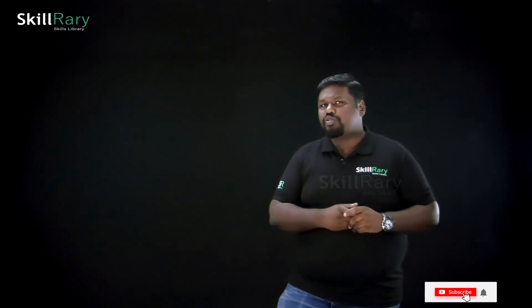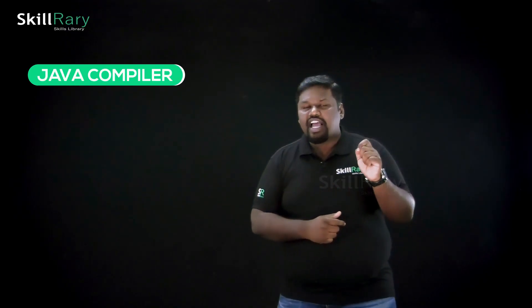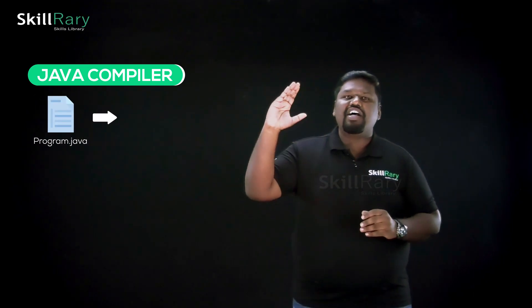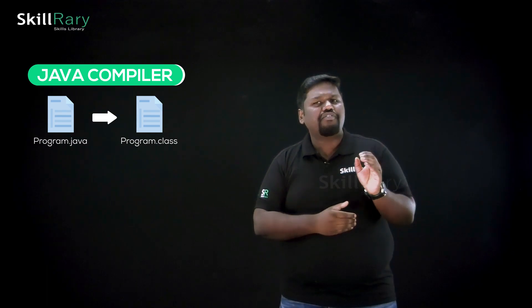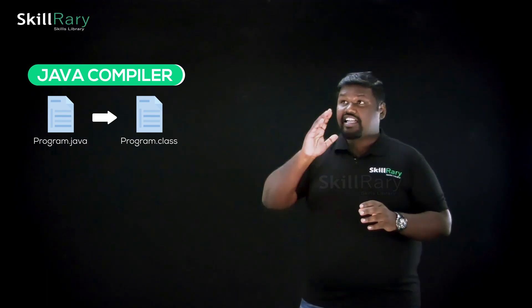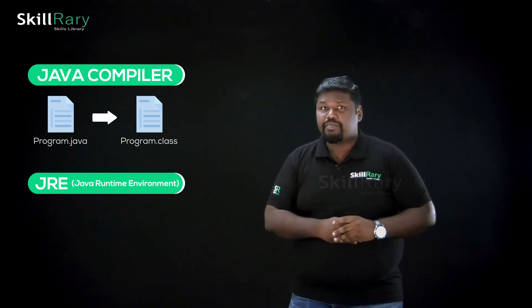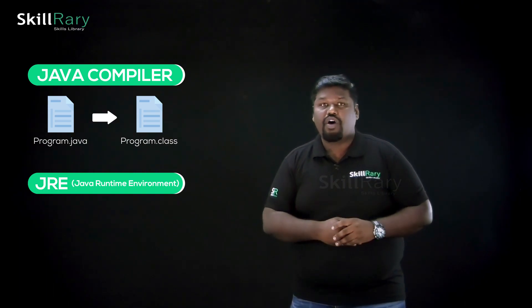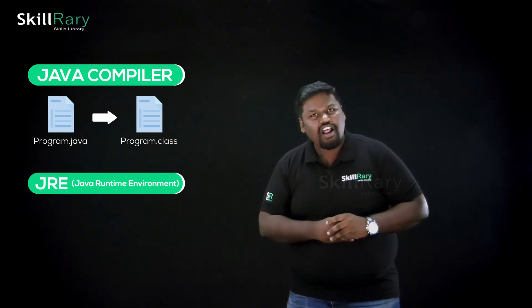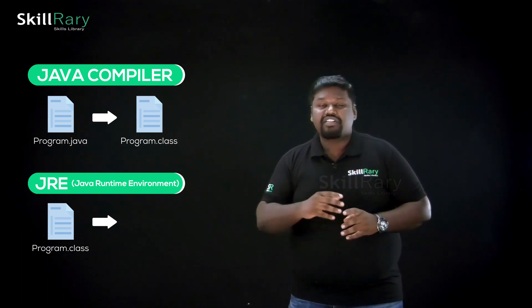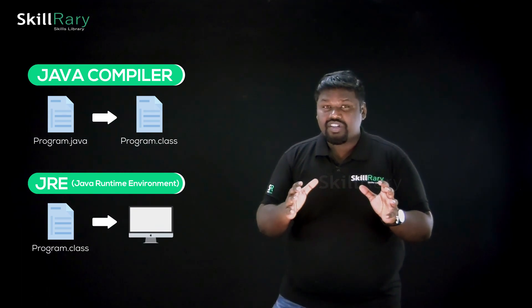For a programmer to develop software using Java, he has two basic requirements. Requirement number one: he needs a Java compiler, which helps to convert a Java source file into a Java class file containing instructions written in bytecode. Requirement number two: he needs an environment — that is nothing but JRE, which stands for Java Runtime Environment — to successfully execute the class file.